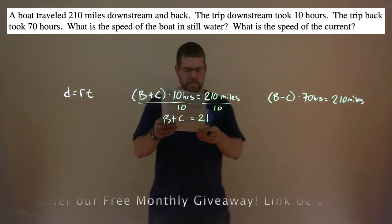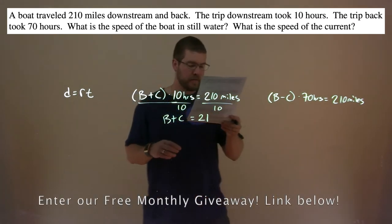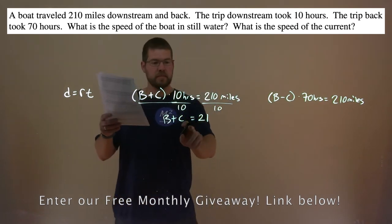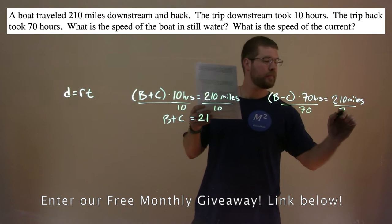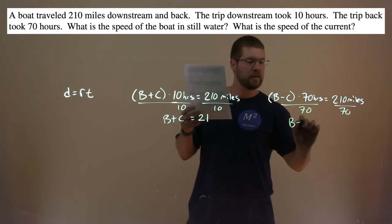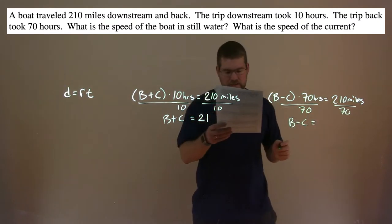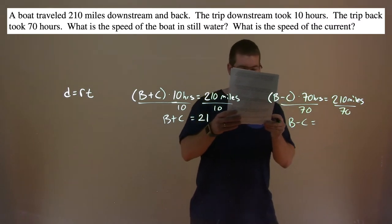The second equation, again, we divide here by 70. And we have B minus C is equal to 210 divided by 70, which comes out to be 3.